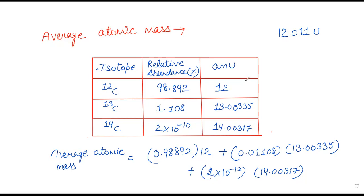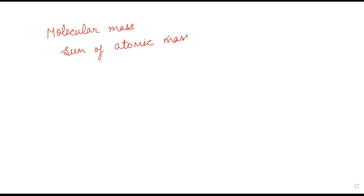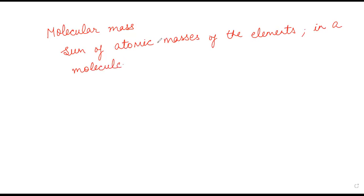Next है molecular mass। Molecular mass — जब हमारे पास कोई molecule है, तो उस molecule के अंदर different atoms होती हैं। उन सभी atoms का mass add करके जो mass बनेगा, वो molecular mass कहलाता है। यानि कि sum of atomic masses of the elements in a molecule — एक molecule के अंदर जितने भी elements हैं उन सबके atomic masses के sum को we call molecular mass.